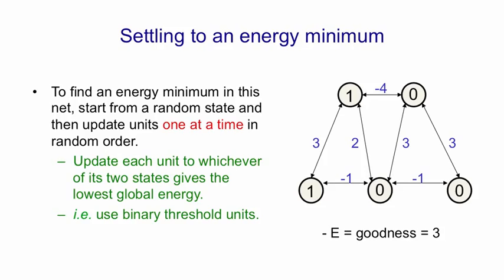Now let's start probing the units. Let's pick a unit at random, like that one, and ask what state should that be in given the current states of all the other units. So if we look at the total input to that, it gets an input of one times minus four, plus zero times three, plus another zero times three. So it gets a total input of minus four. That's below zero, so we turn it off, i.e. it stays in the off state.